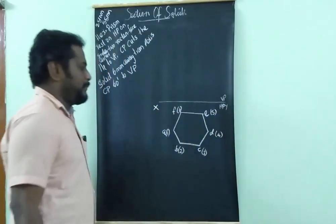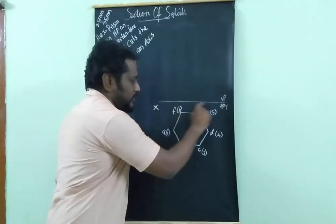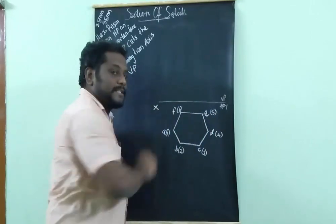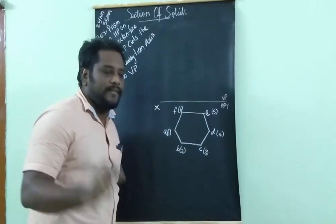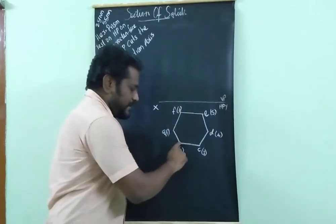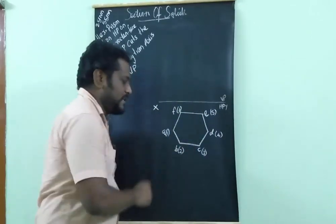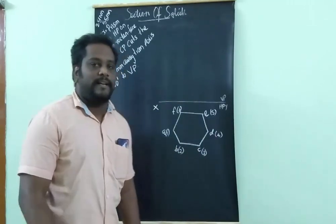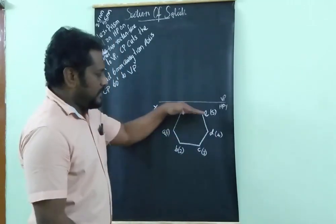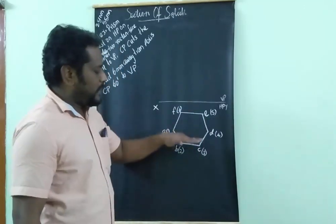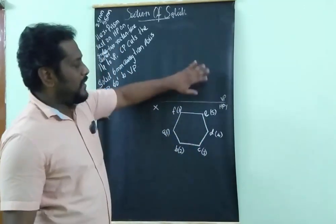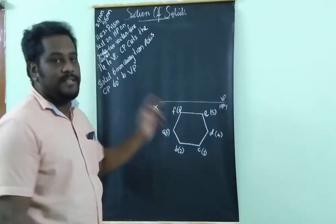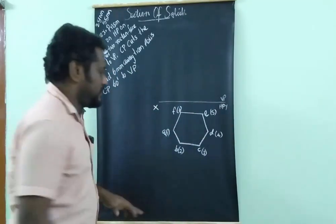This line has four corners and represents a rectangular face. Similarly, this line also has four corners and represents another rectangular face. These two rectangular faces are parallel to VP — the condition is satisfied.